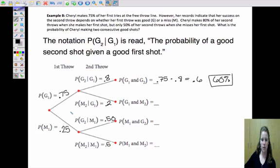And you can look and find the probability that she makes one misses the second, that she misses the first but then makes the second, or misses both of them by multiplying across in these different probabilities.